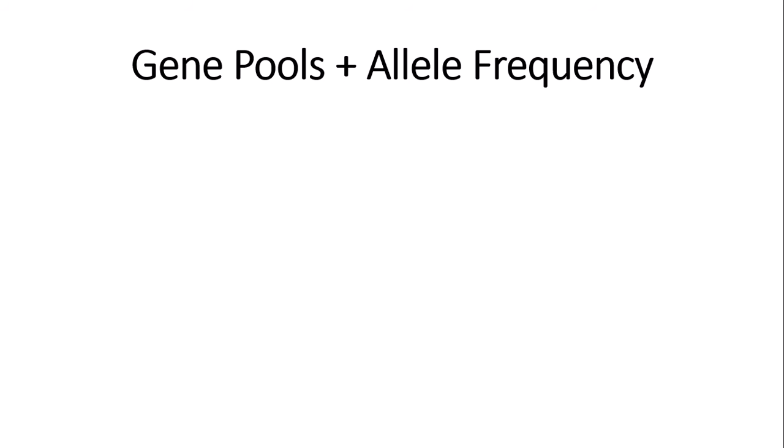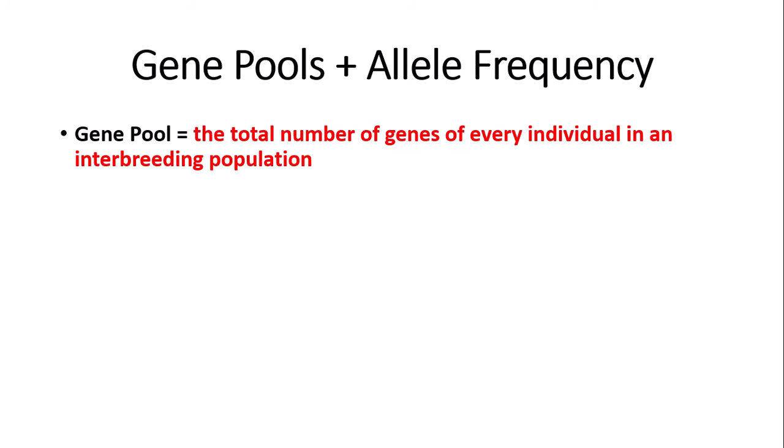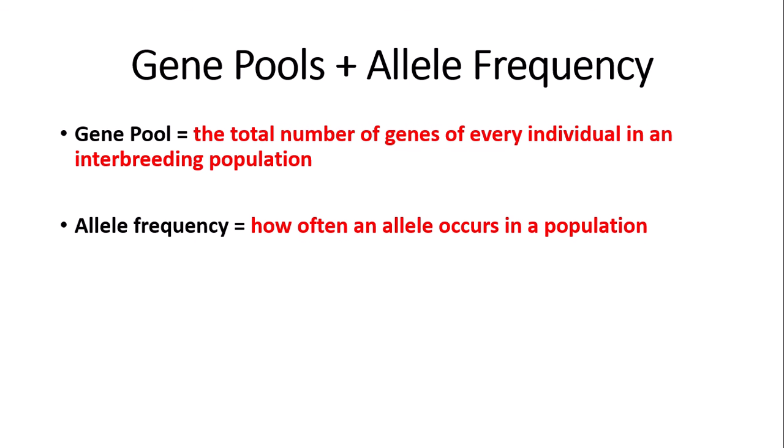Now let's look at the concept of gene pools and allele frequency. A gene pool is the total number of genes of every individual in an interbreeding population — basically every single gene present in the population. Allele frequency is how often an allele occurs in the population. So an allele with a high allele frequency occurs a lot — for example, if a population has a high allele frequency of cystic fibrosis, then a lot of people in the population have cystic fibrosis.